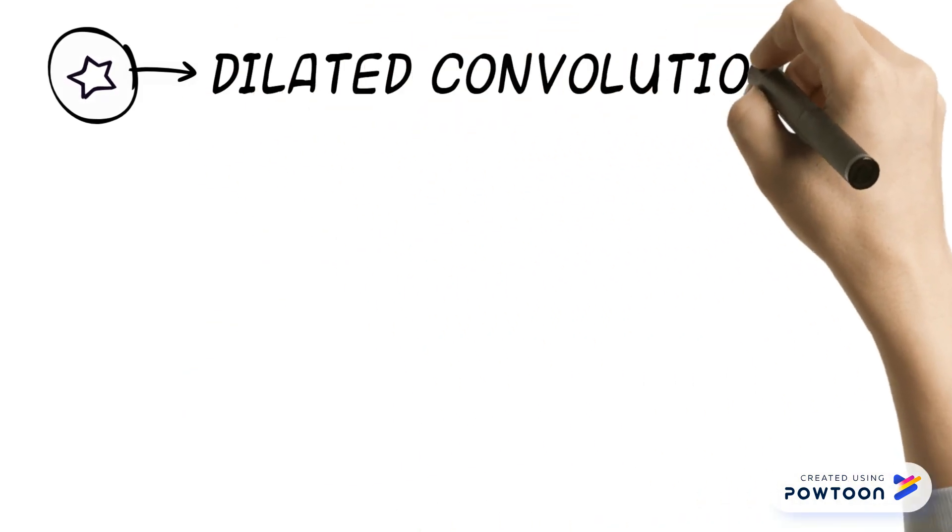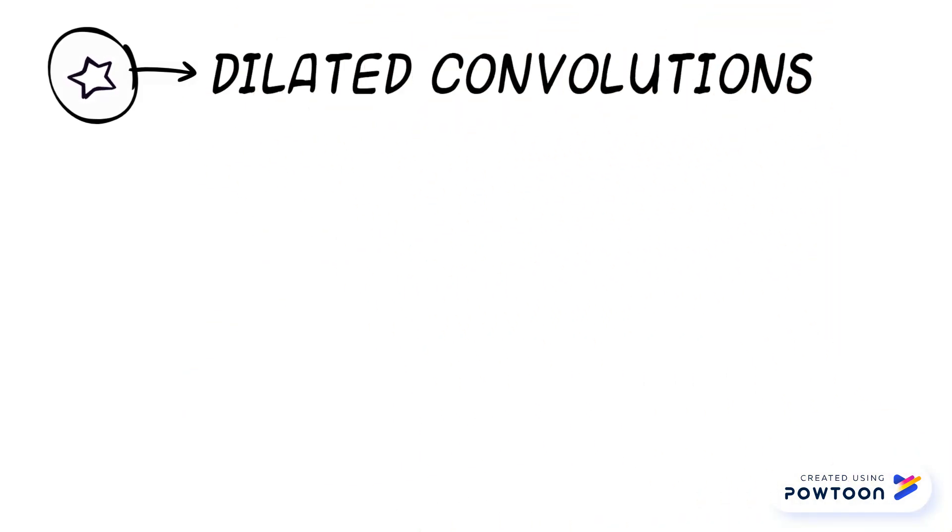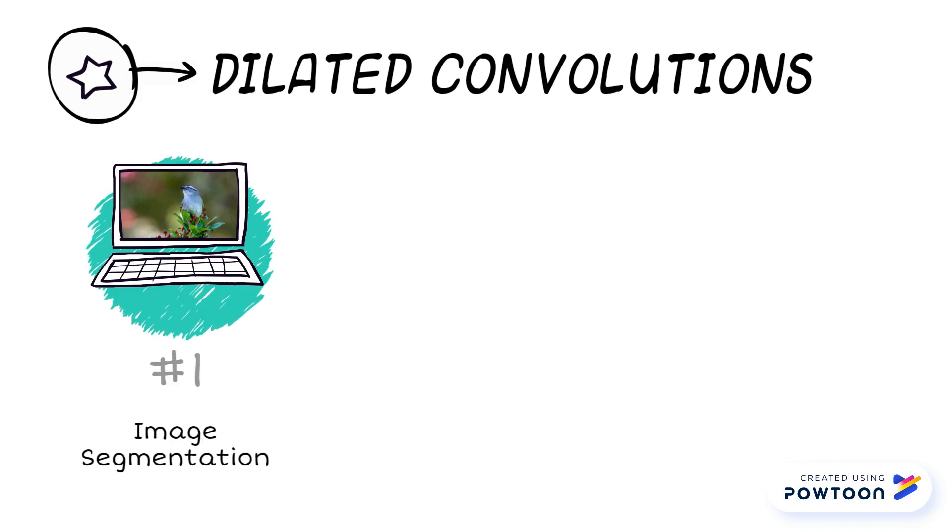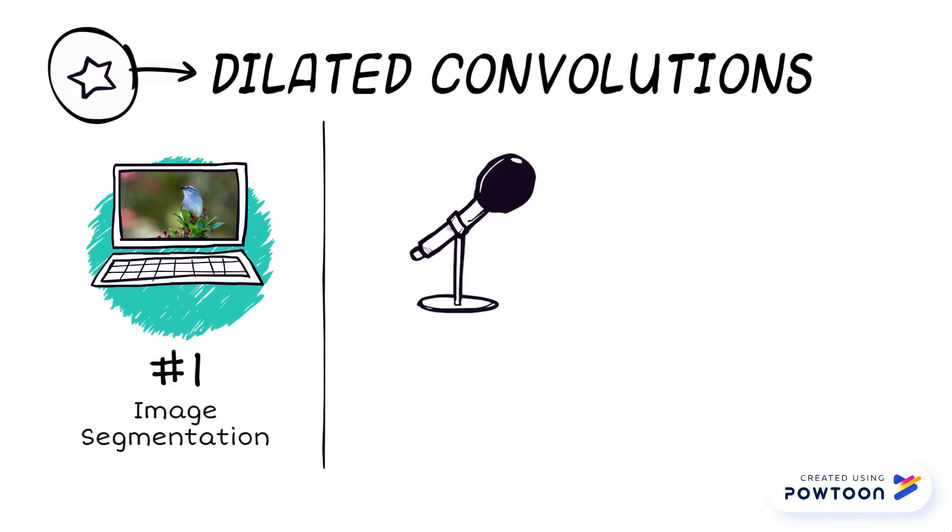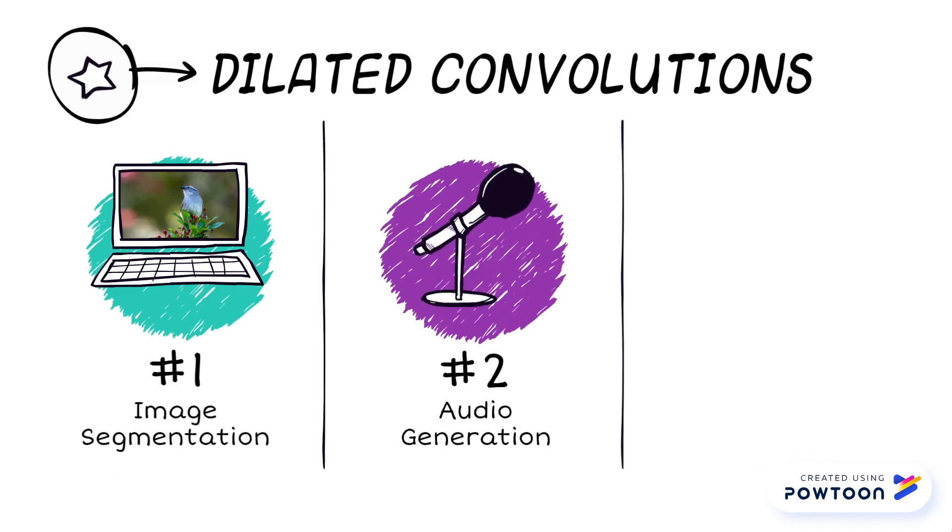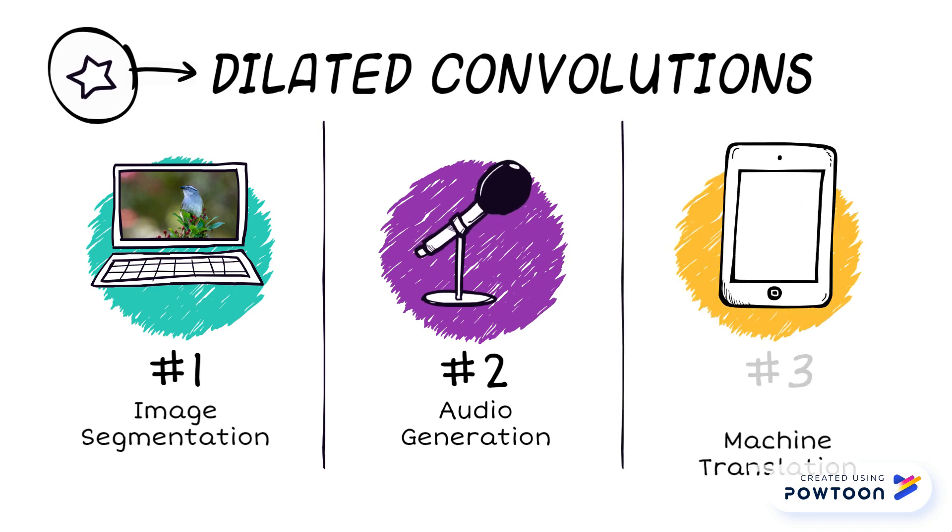Dilated convolutions are widely used in deep learning models for dense prediction tasks like image segmentation, audio generation, and machine translation.